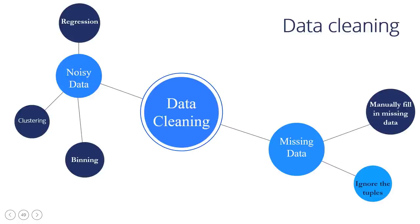Noisy data: fixing noisy data is also included in the process of cleaning data. This data contains data points that aren't essential, data that's not useful, and data that's tough to combine with other data. Binning: the process of sorting the data in a large collection into smaller, more comparable groupings — for example, dividing income as $35,000 to $50,000, $50,000 to $75,000, and so on. Regression: the process of using regression analysis to determine which variables will actually apply to your research, helping to smooth out significant volumes of data. Clustering: clustering algorithms correctly group data so that it may be evaluated alongside similar data — most commonly used in unsupervised learning where very little is known about correlations within the data.